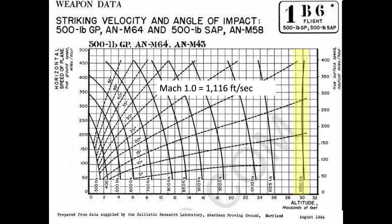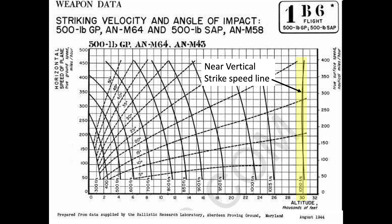No release speed or altitude combination shown will a bomb strike the ground at sonic speeds. Since the 1,050 foot per second bomb strike speed line is near vertical, the bomb strike speed is independent of the plane's release speed at altitudes of 30,000 feet.